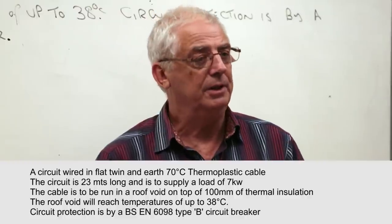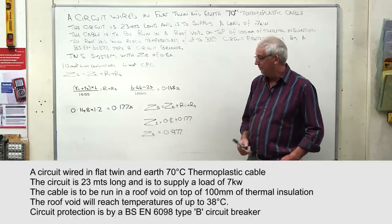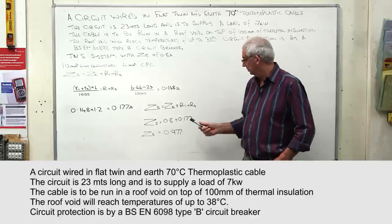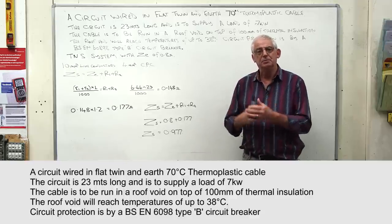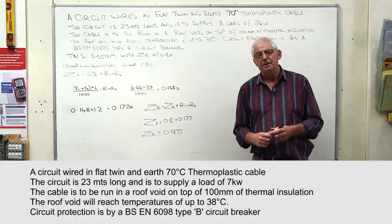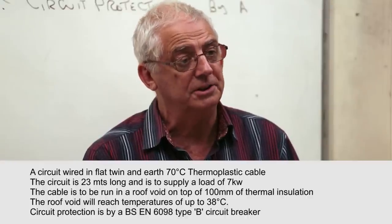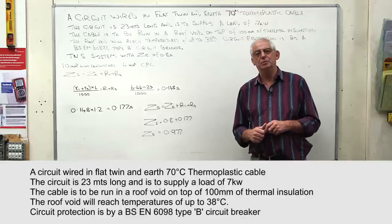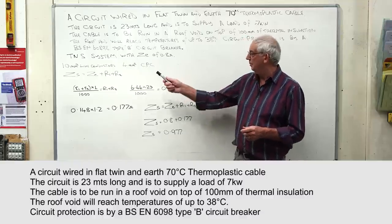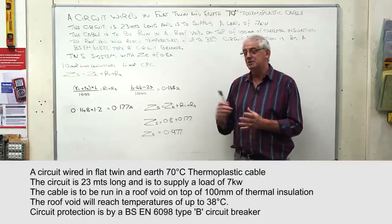Adding the corrected cable resistance to Ze gives us Zs: 0.8 plus 0.177 equals 0.977 ohms. We then compare this to Table 41.3 in BS 7671, which gives the maximum permissible Zs for a 32 amp Type B circuit breaker as 1.44 ohms. Since 0.977 ohms is less than 1.44 ohms, the circuit is satisfactory.